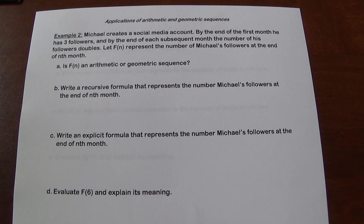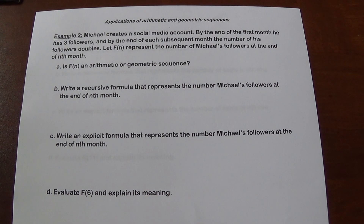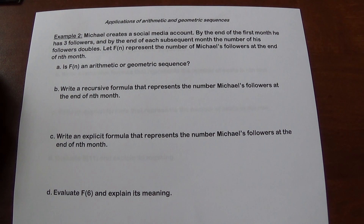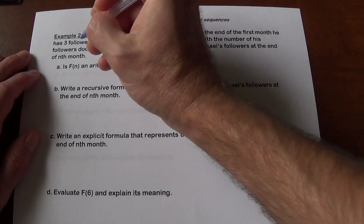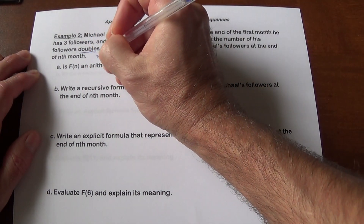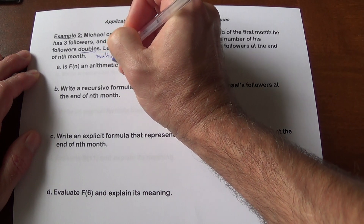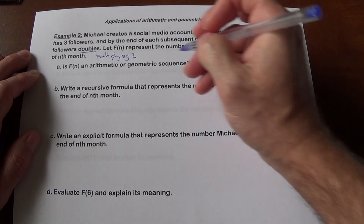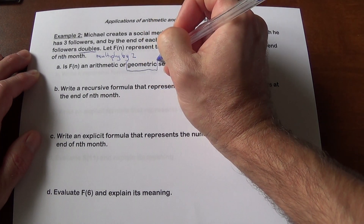Michael creates a social media account. By the end of the first month, he has three followers, and by the end of each subsequent month, the number of his followers doubles. Let f of n represent the number of Michael's followers at the end of the nth month. It doubles, meaning you multiply by 2 — the same number each time — so this is going to be a geometric sequence.